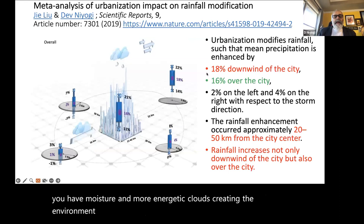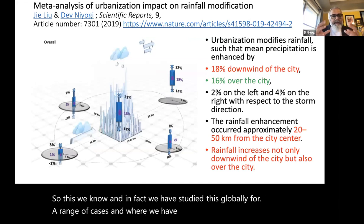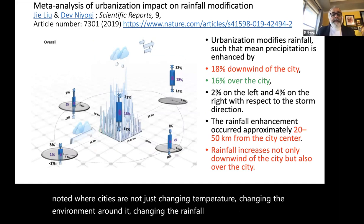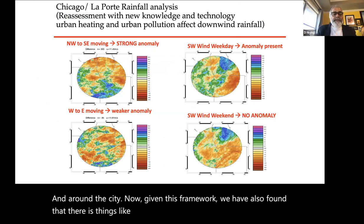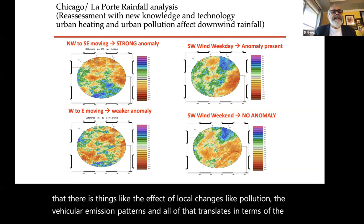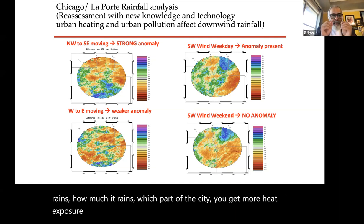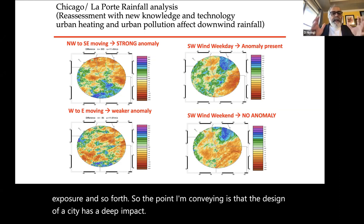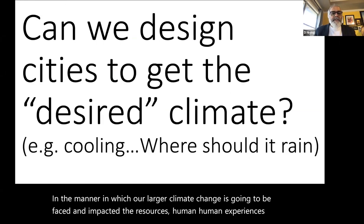We have studied this globally and found that cities are not just changing temperature — they are changing the environment and rainfall around them. Local changes like vehicular emission patterns translate into larger-scale changes in and around the city: when it rains, where it rains, how much it rains, which part gets more heat exposure. The design of a city has a deep impact on how larger climate change is experienced.